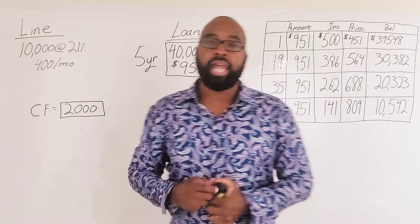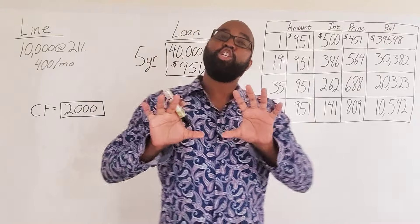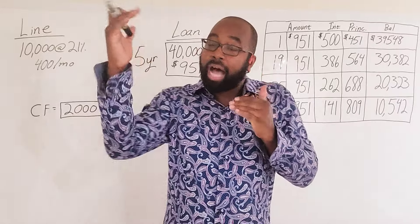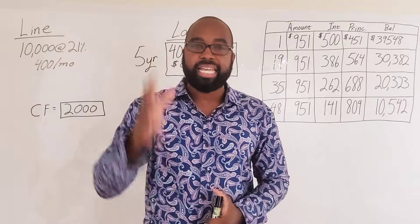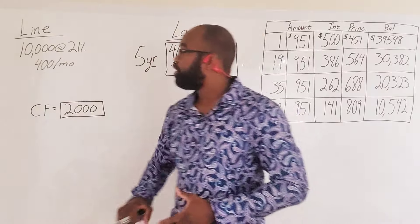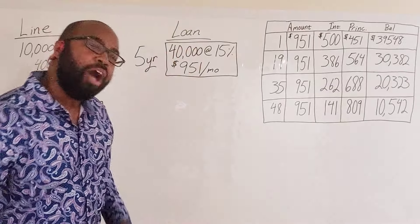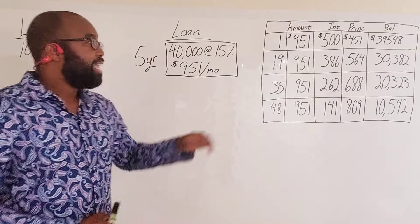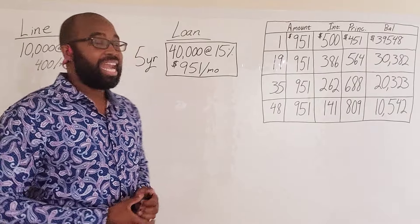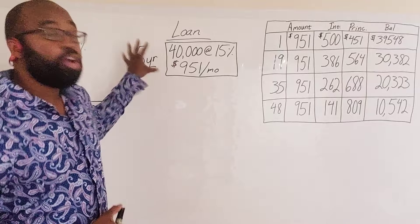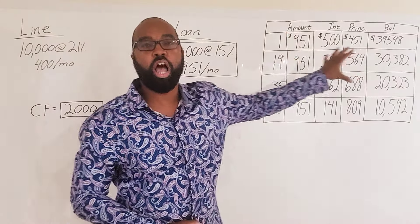So we're going to be starting with our line of credit. We've started with, let's just say, $10,000 at 21%. Now keep in mind that your numbers may be a little different. They may be a little higher, they may be a little lower. However, the principle of what we're going to teach is what you need to comprehend. $400 each month, you've got a cash flow of $2,000. Now, our loan is $40,000 at 15% and the car dealership or the financial gurus, the bank wants you to pay $951 each and every month. And they're going to lock you into a five-year time period and this is the amortization of this loan.